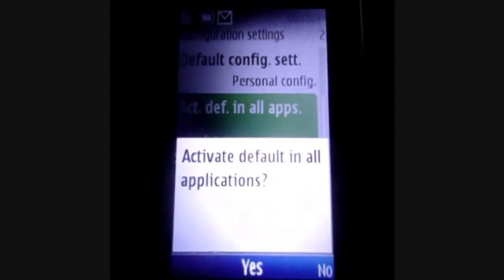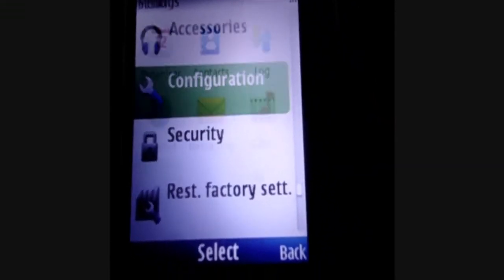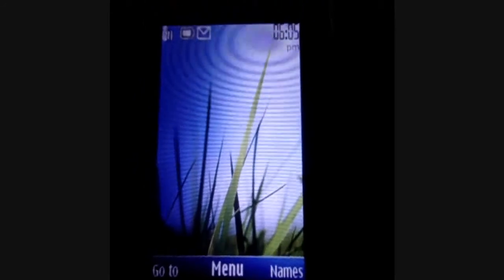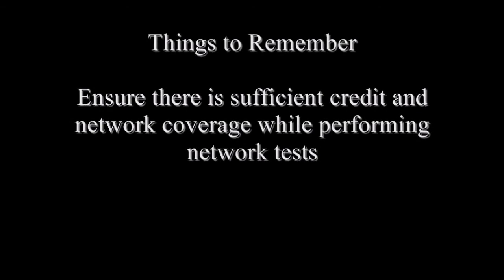This completes the manual configuration settings for GPRS. You can open ComCare and run the network test to verify them. A couple of things to remember: if you remove the SIM card, the GPRS settings have to be reconfigured; otherwise it's a one-time process. There could be other reasons why network tests fail — ensure there is sufficient credit and you are in a good network coverage area. For more details, visit confluence.demagi.com and search for Setup Feature Phones.